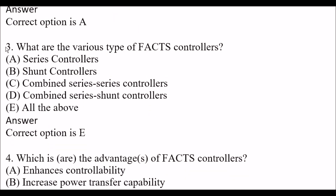Next question: What are the various types of FACTS controllers? Option A: Series Controllers. Option B: Shunt Controllers. Option C: Combined Series-Series Controllers. Option D: Combined Series-Shunt Controllers. Option E: All of the above. The right answer is Option E, all of the above. They all are types of FACTS controllers — Series, Shunt, Combined Series-Series, and Combined Series-Shunt.